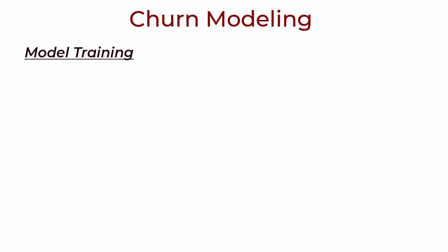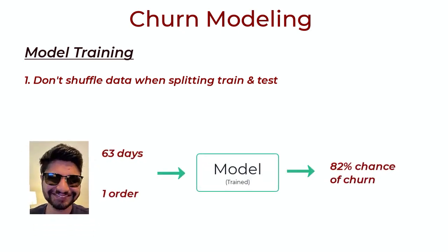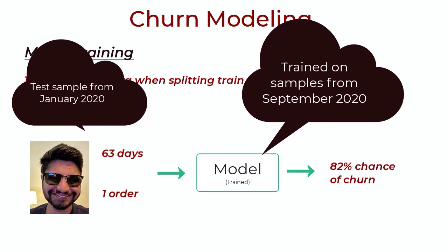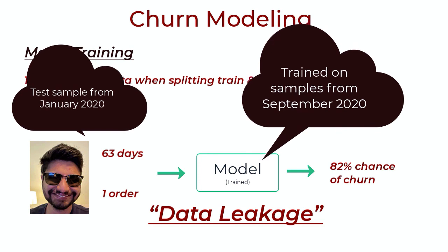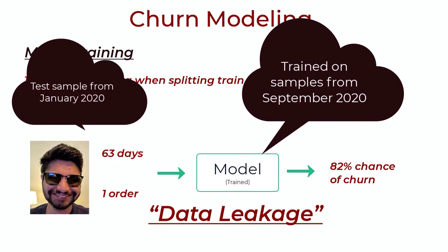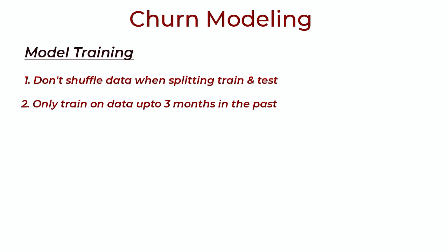When training the model, there are a couple of gotchas. First, we can't shuffle the train and test data — in typical ML problems you shuffle, but here it could mean making predictions on future data, which is data leakage. We want to avoid this at all costs. Second, we can only train on data up to three months in the past, since we don't know if customers after that point have actually churned — we don't have those labels.